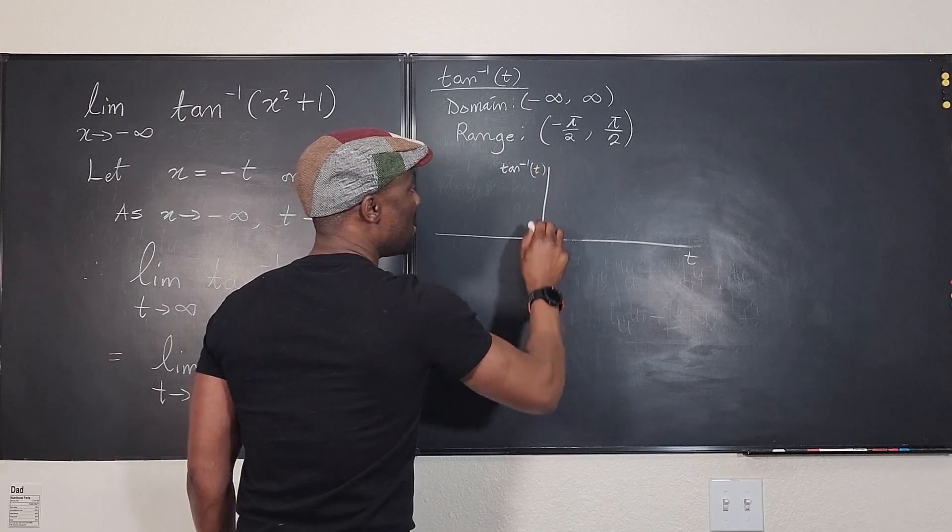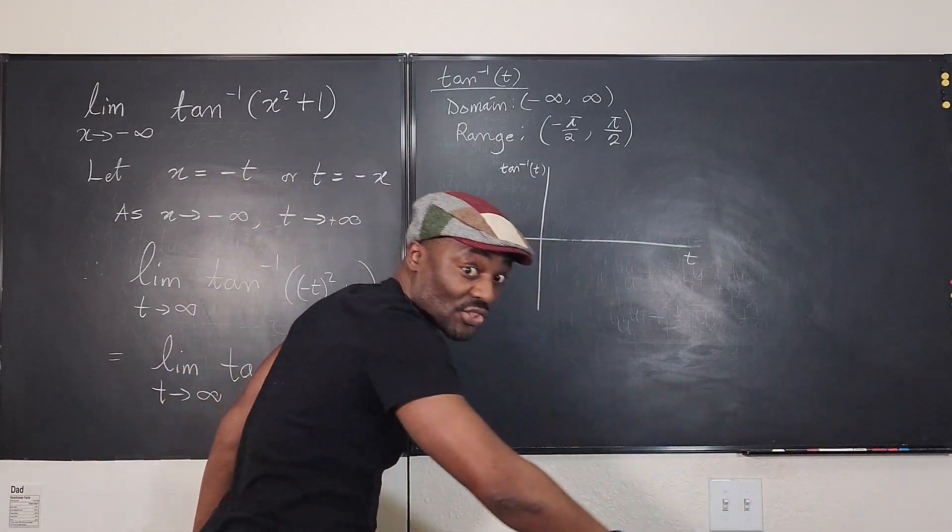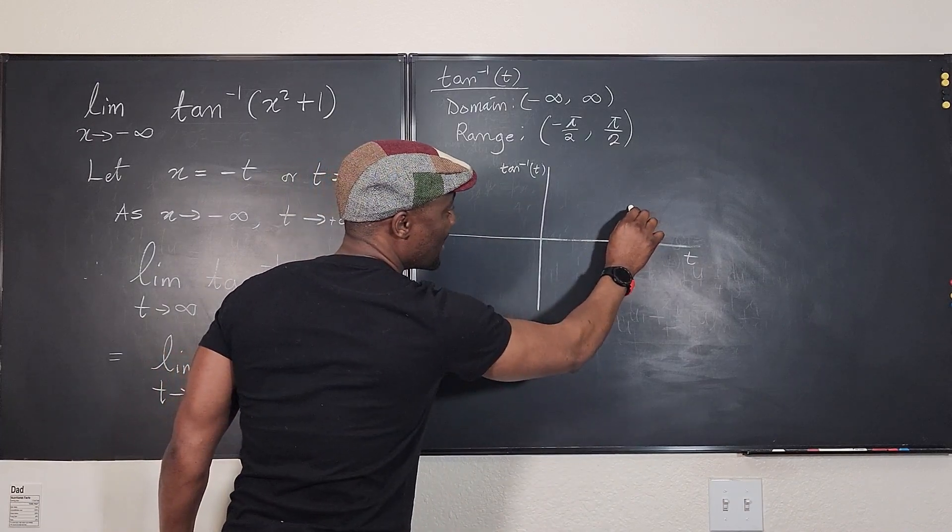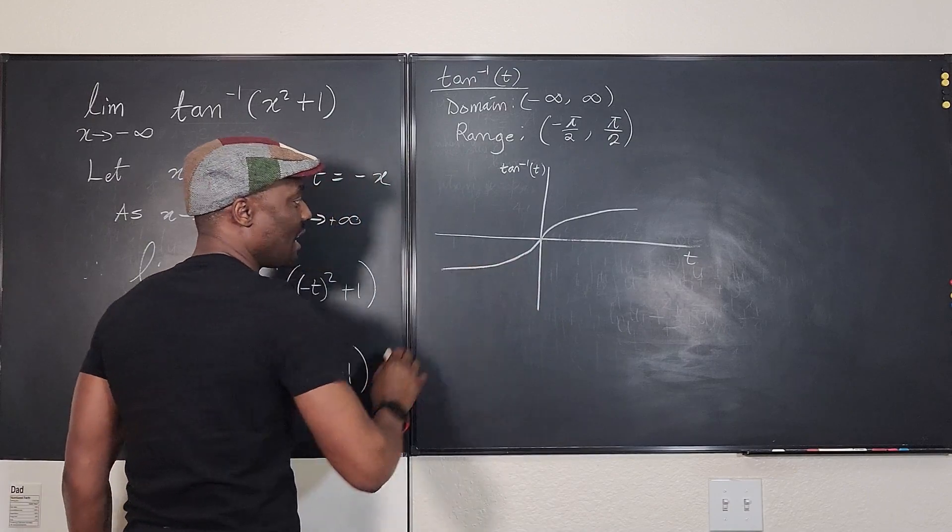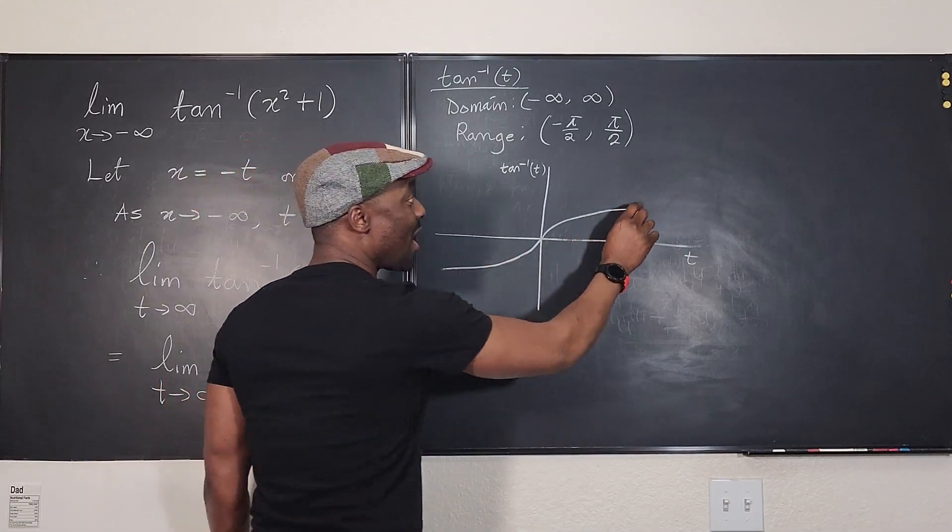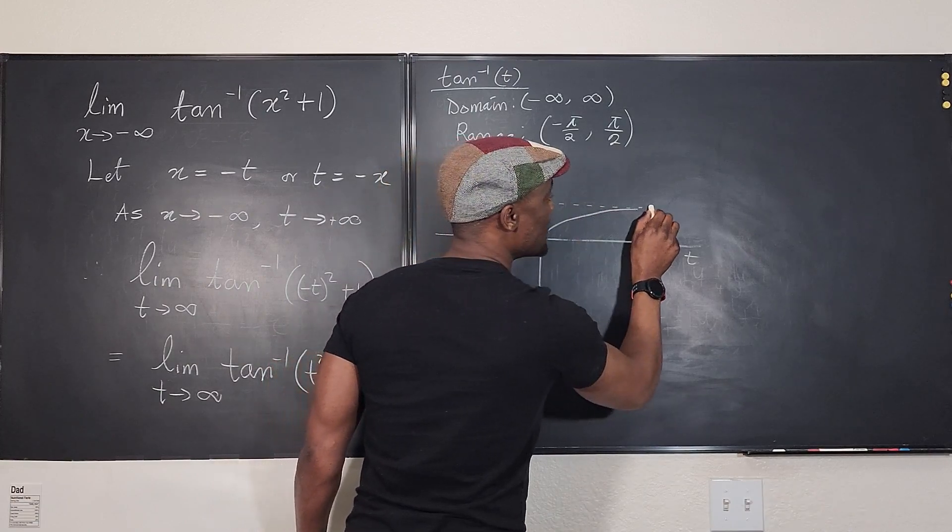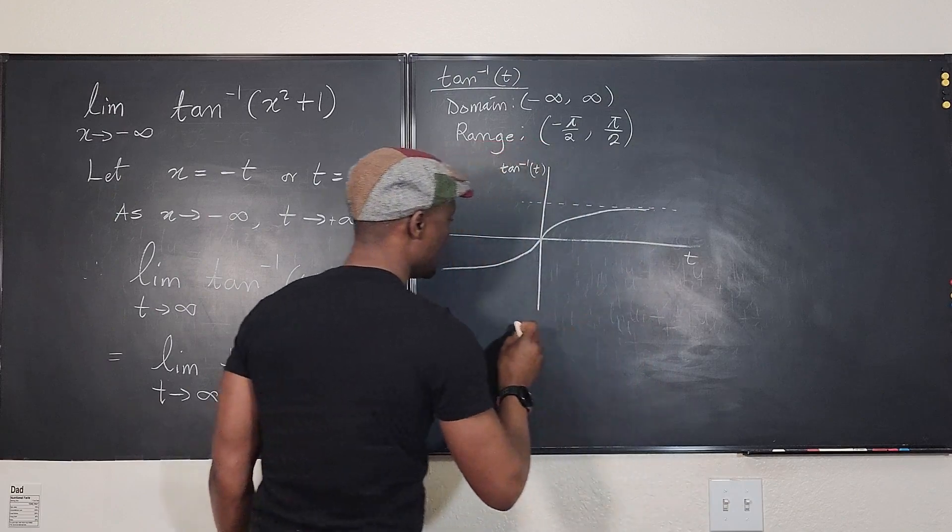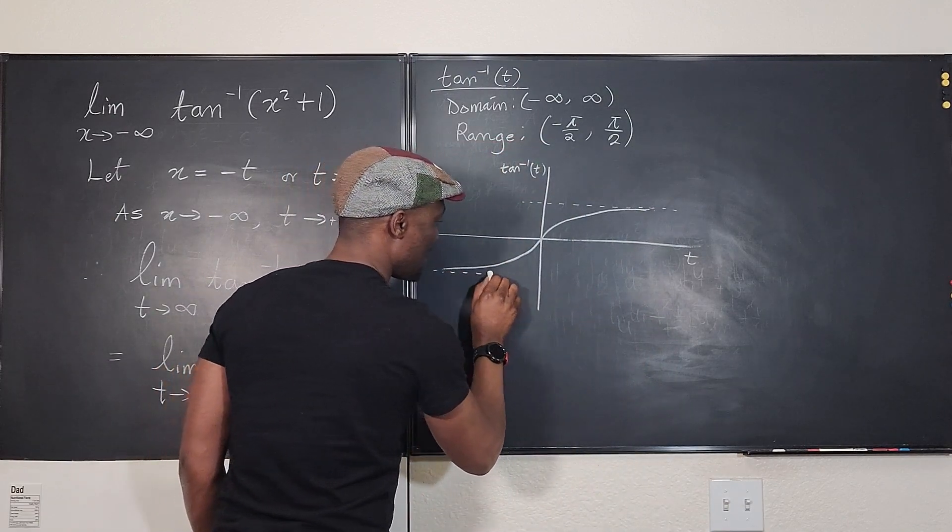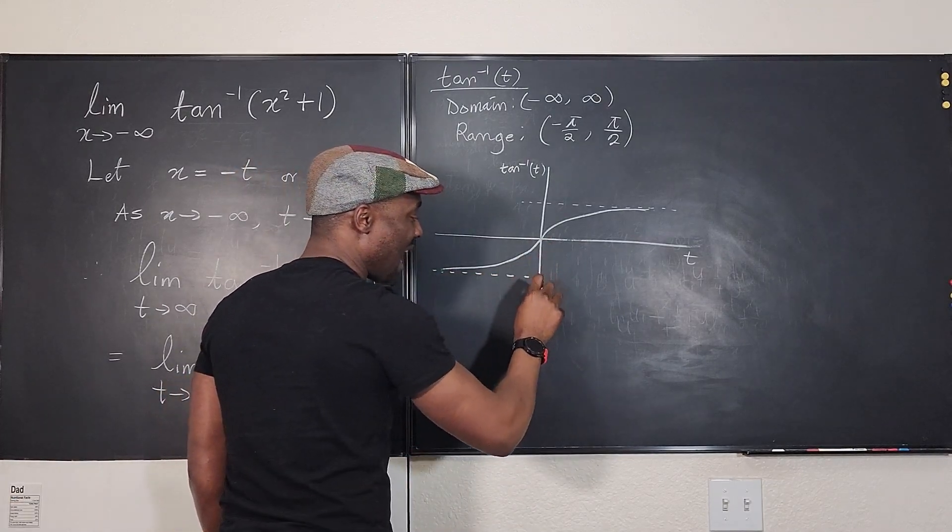Remember that the graph looks like an S that is stretched out, something like this, like that. And you see this graph does not go up forever.